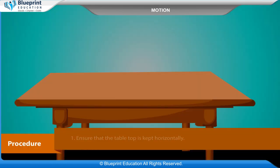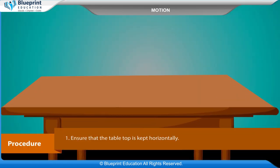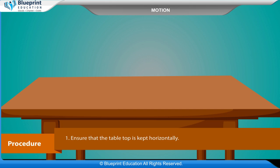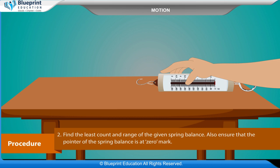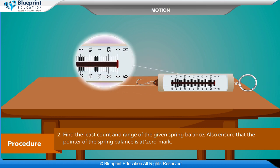Procedure: Ensure that the table top is kept horizontally. Find the least count and range of the given spring balance. Also ensure that the pointer of the spring balance is at the zero mark.